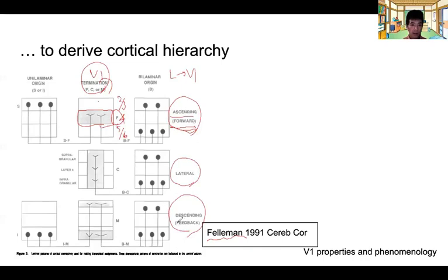On the other hand, descending type connection, such as V2 to V1 or other types of feedback connection going opposite of this ascending direction, tends to originate from upper or lower layers and then terminate in the upper or lower layer. It could be coming from only lower layer and then terminate in both. That's a typical descending projection. And the lateral corresponds to the similar level of the hierarchy, such as the most prominent is probably MT to V4. These tend to have upper or lower areas of origin and then project across all layers.